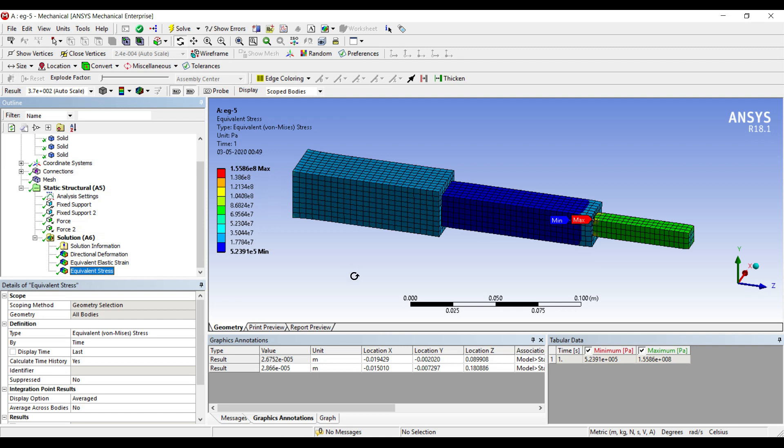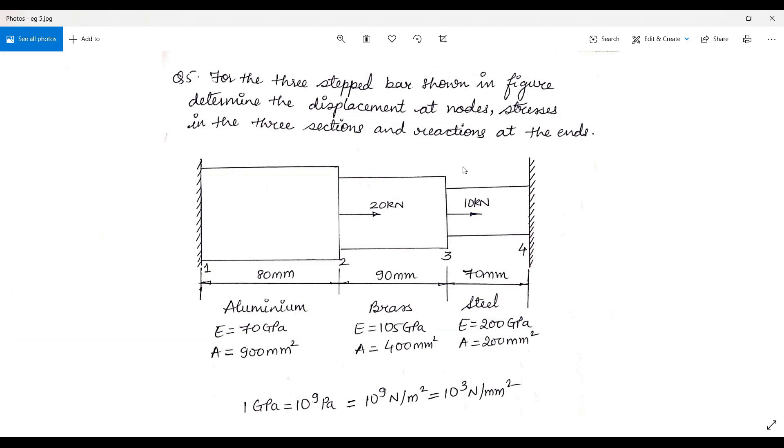You can solve this numerical by FEA method, and you can check the solution, the answer of deformation, stress, strain at each node will be same. Now as per the question, you have to calculate the reaction at the end, which is the load applied here, and at this end.